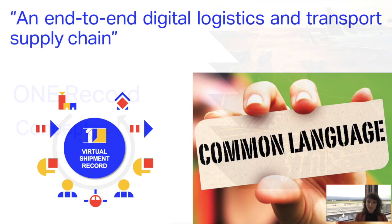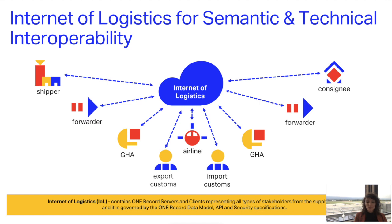Let's go through the OneRecord concept. The vision of OneRecord is an end-to-end digital logistics and transport supply chain, meaning we need to move from a peer-to-peer messaging system to data sharing through a virtual shipment record — all in a common language defined in an RDF ontology. All stakeholders connect into what we call the Internet of Logistics, which enables semantic and technical interoperability: semantic meaning everyone understands the shared data, and technical meaning they use commonly known technology and security platforms.